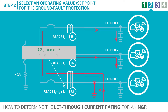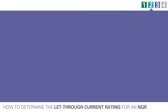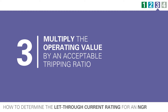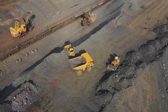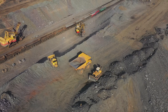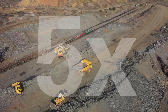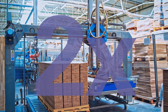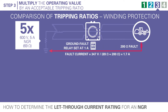In a properly coordinated system, only the faulted feeder relay will pick up or detect the ground fault. In step three, take that operating value and multiply it by the acceptable tripping ratio. Tripping ratio is the ratio of prospective ground fault current defined by the NGR to the operating value of the ground fault protection. The tripping ratio is also determined by the application: in mining applications where portable equipment endures harsh environments, a tripping ratio of five is common, while in an industrial application where the protection may be alarming, a tripping ratio of two could be used. An adequate tripping ratio ensures that sufficient ground fault current is available for detection when a ground fault occurs.